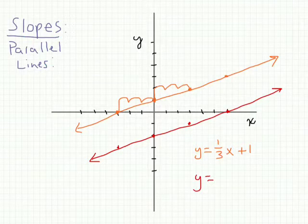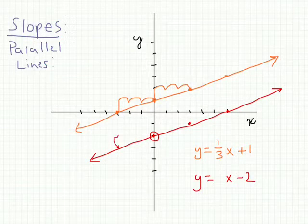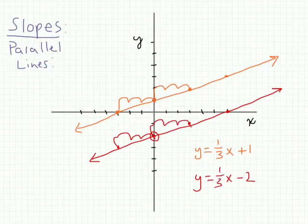Let's look at our red line. The red line's y-intercept is at negative 2, so it's minus 2. The slope moves up 1 across 3 — again, up 1 across 3. So this also has a slope of 1/3.